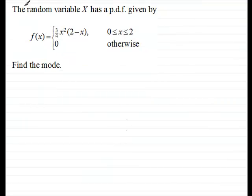Now in this example, we've got the random variable x has a probability density function given by f of x equals three quarters x squared, all multiplied by 2 minus x, for x between and including 0 and 2. And it's zero otherwise. And what we've got to do is find the mode.